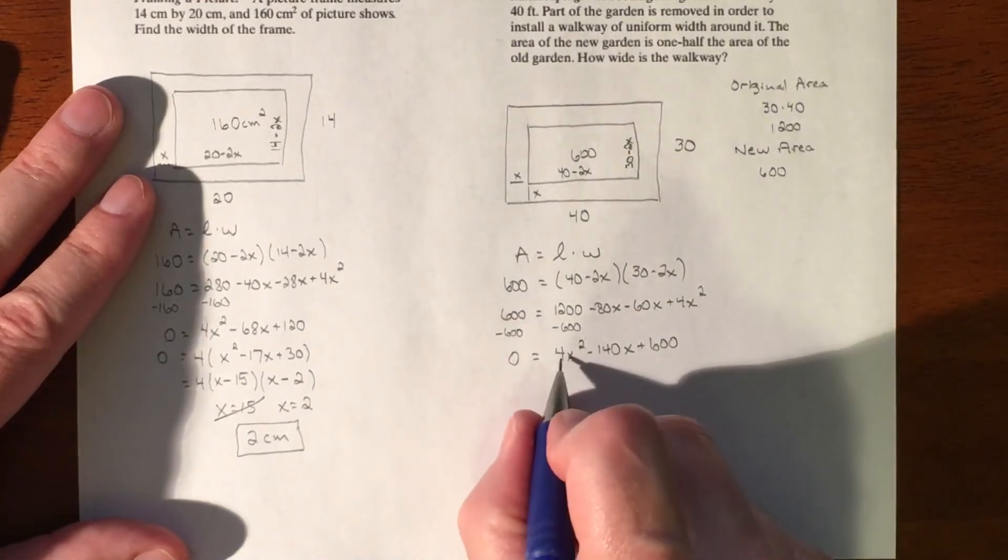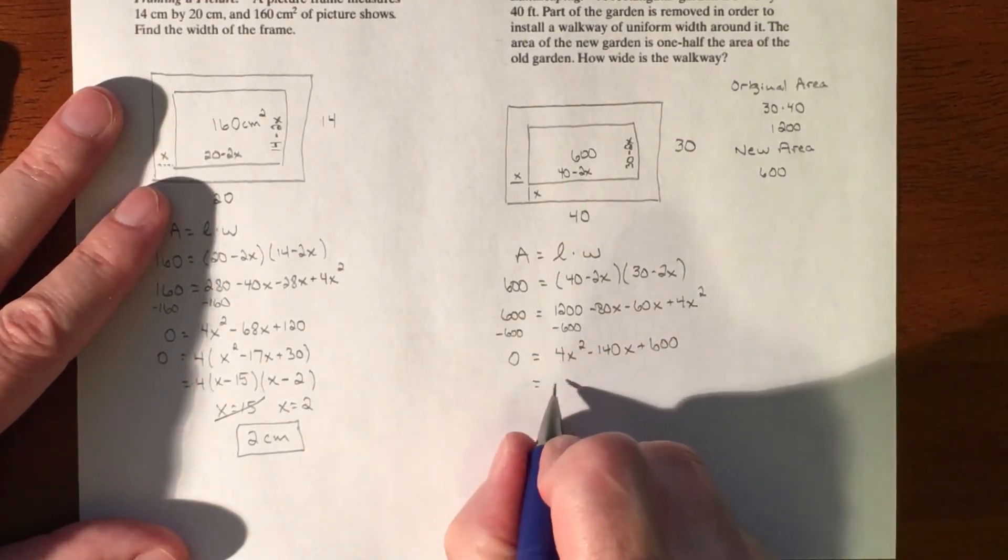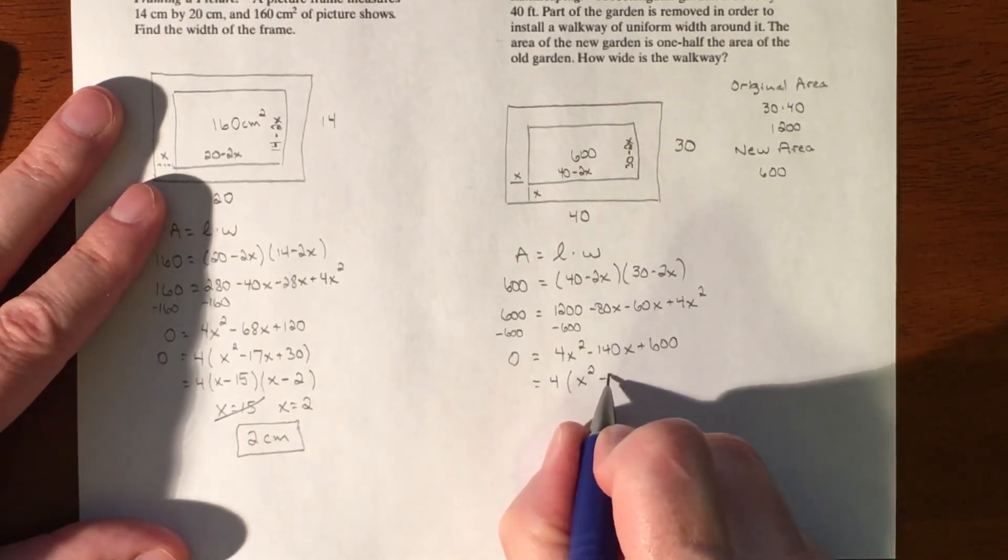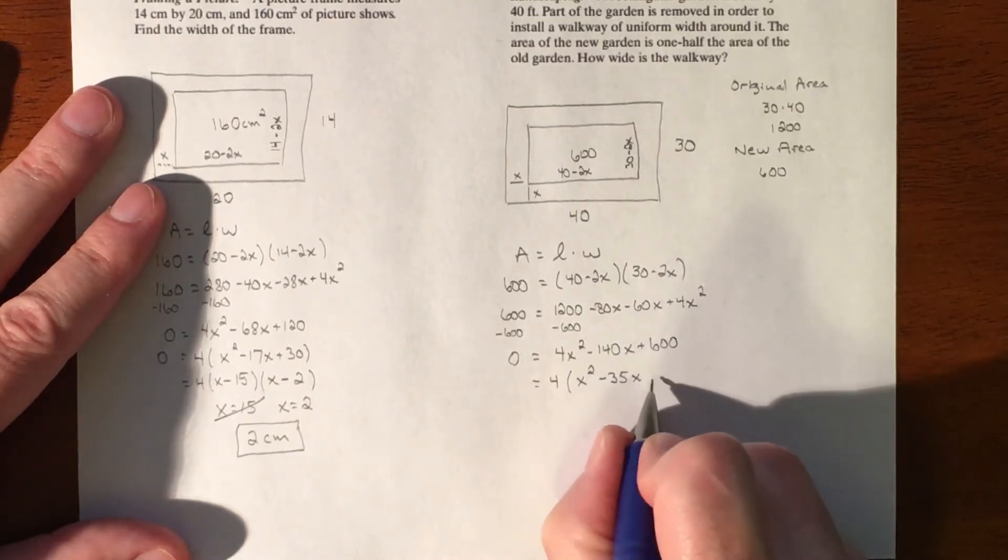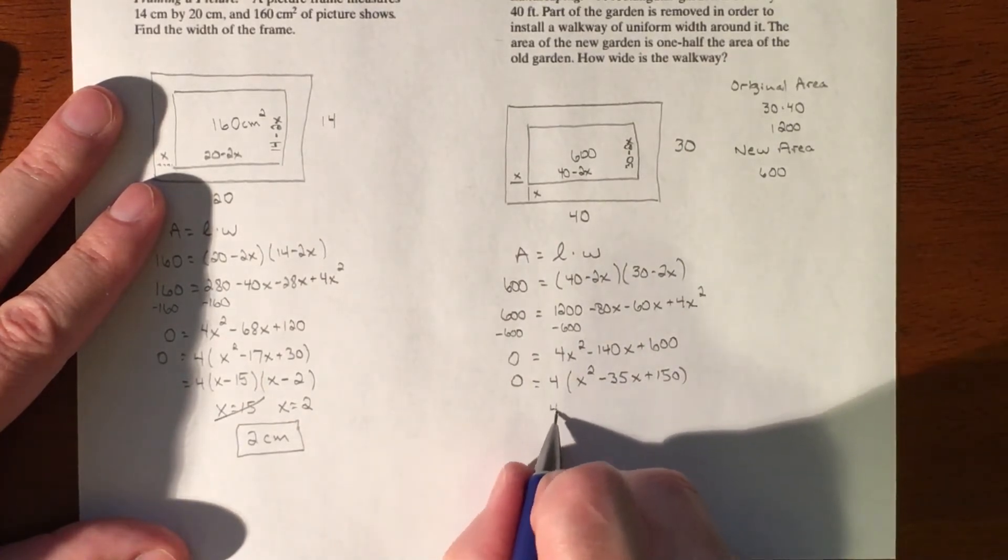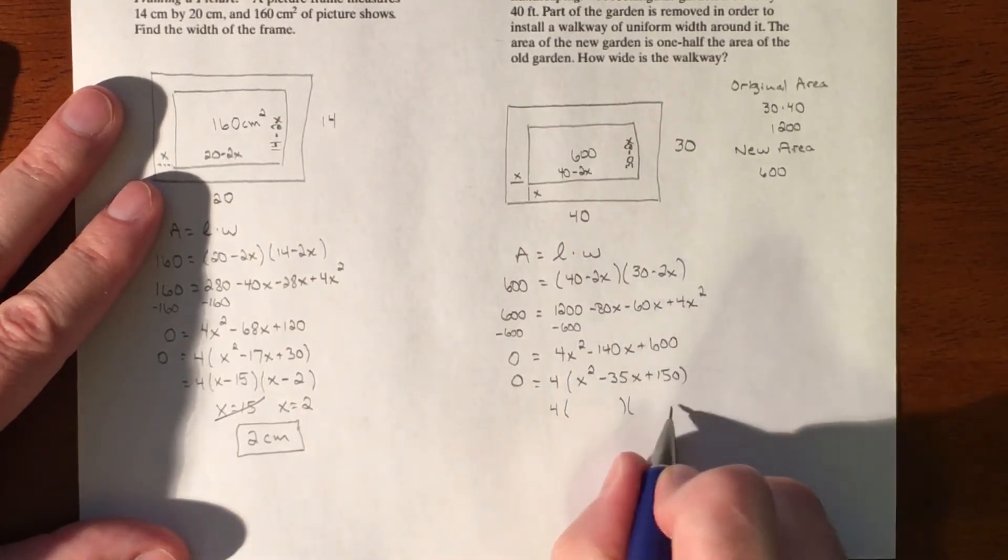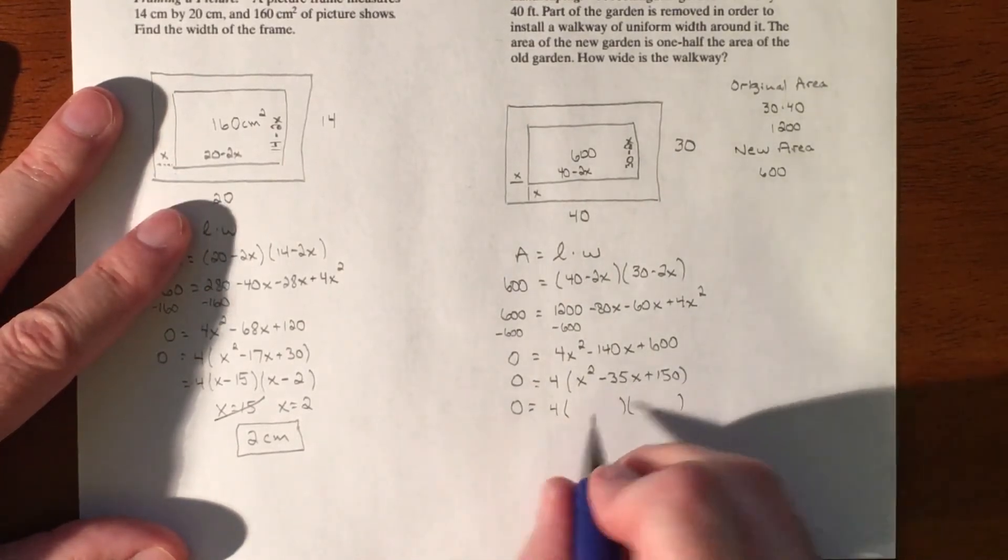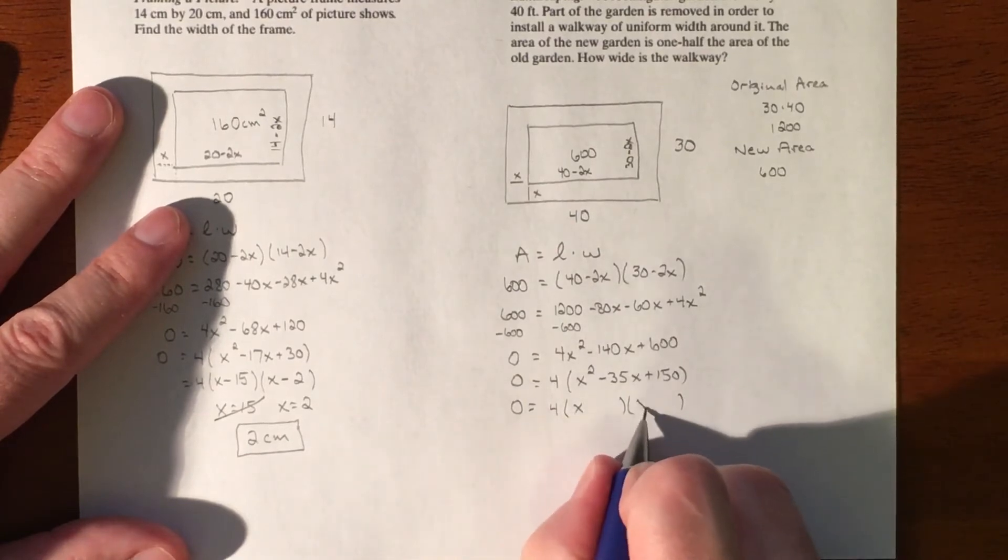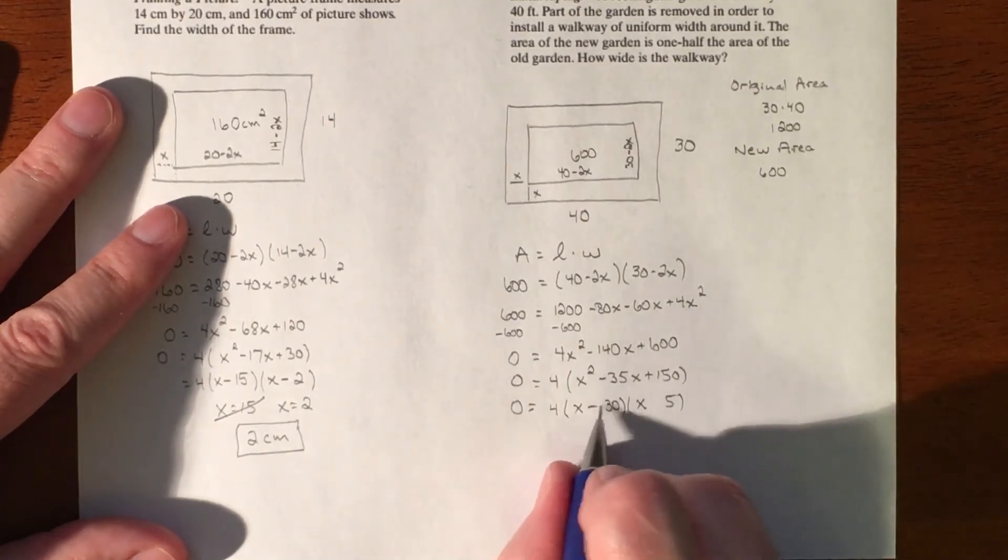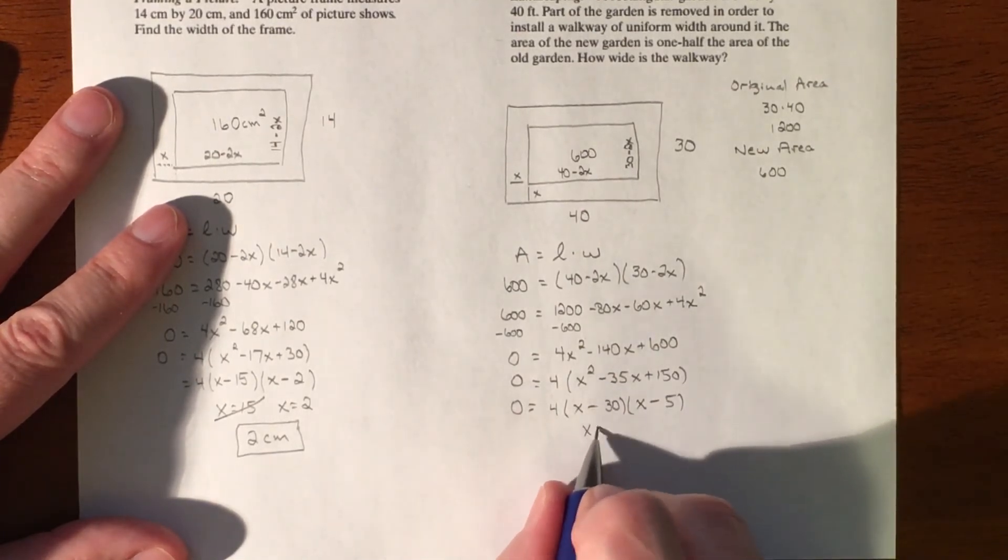All right, so now that thing is factorable. First thing I'm going to do is take a 4 out of every single piece, so that leaves x squared minus 35x plus 150. And then this is factorable. So I need two numbers that multiply to 150 that add up to 35, and those two numbers are 30 and 5, both being negative. So then our solutions,